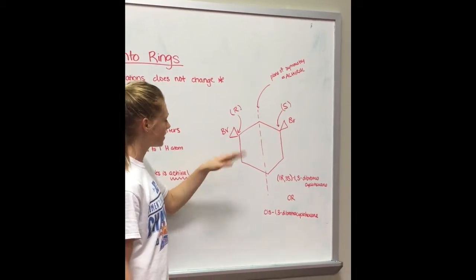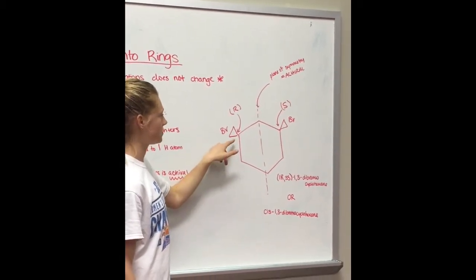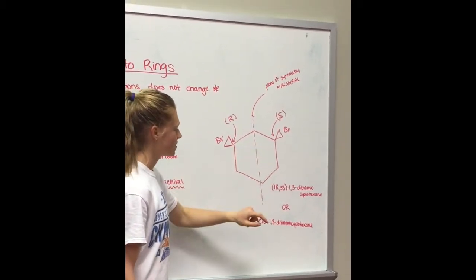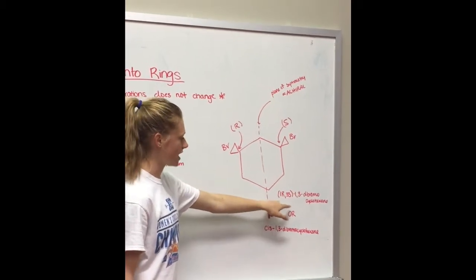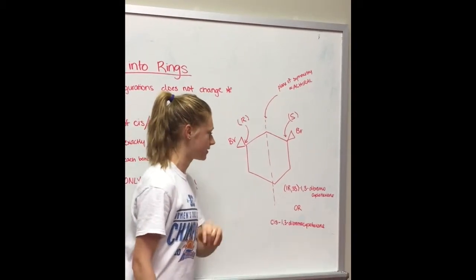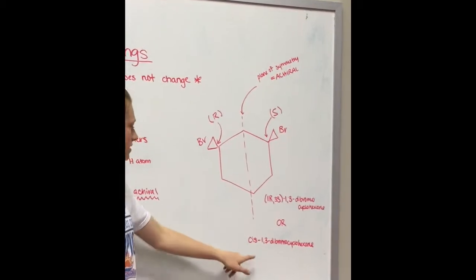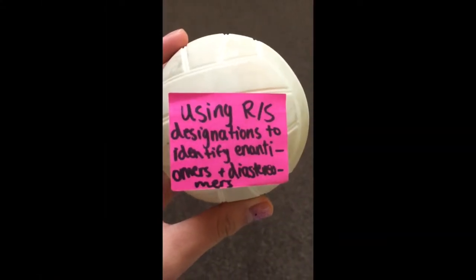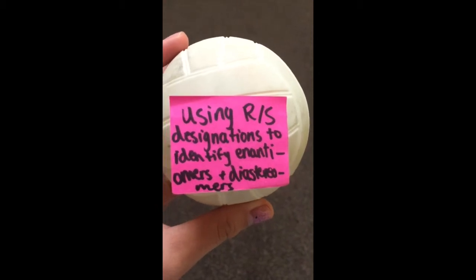By looking at the stereocenters, this one you can figure out is R and this is S. So you could name it 1R,3S-1,3-dibromocyclohexane or more simply cis-1,3-dibromo. Using R/S designations to identify enantiomers and diastereomers.